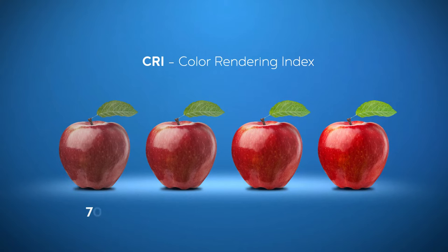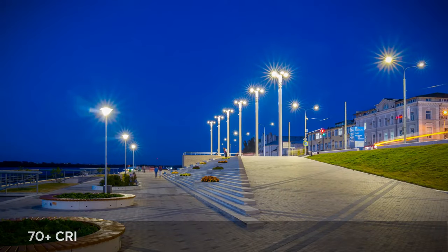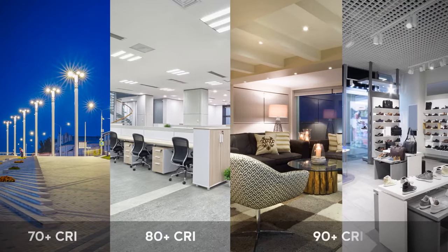Another good rule of thumb is the higher the CRI, the better colors on clothing, walls, and objects will appear underneath that light. When selecting your LED fixture, look for a minimum CRI that suits your specific application needs. It's a good rule of thumb to stick to LEDs that have a CRI of at least 70 for outdoor, 80 for indoor, and 90 for residential and retail. It's really that simple.